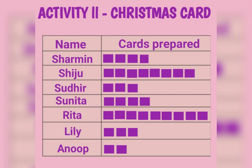Activity 2: Christmas Card — Name and number of cards prepared. Sharmin: 4 cards, Shiju: 8 cards, Sudhir: 3 cards, Sunita: 4 cards, Tricha: 9 cards, Lilli: 3 cards, Anu: 2 cards.